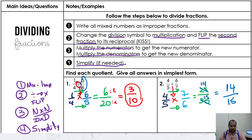Dividing fractions, as you've noticed, we need four steps. Number one, it's the same step for all operations: write mixed numbers as improper fractions. Step number two, change the division symbol to multiplication and flip the second fraction. The third step, numerator times numerator, denominator times denominator, as we did before with multiplication. And number four, simplify if possible.